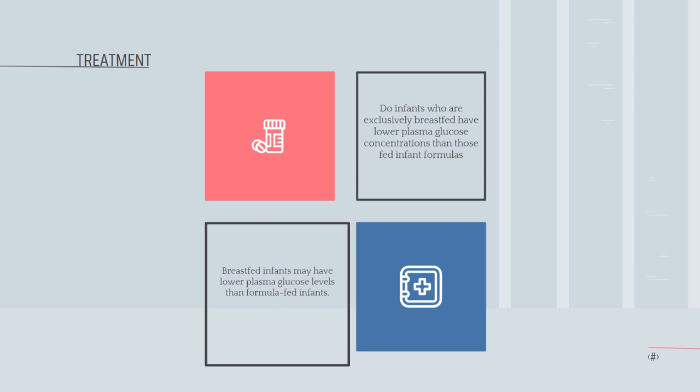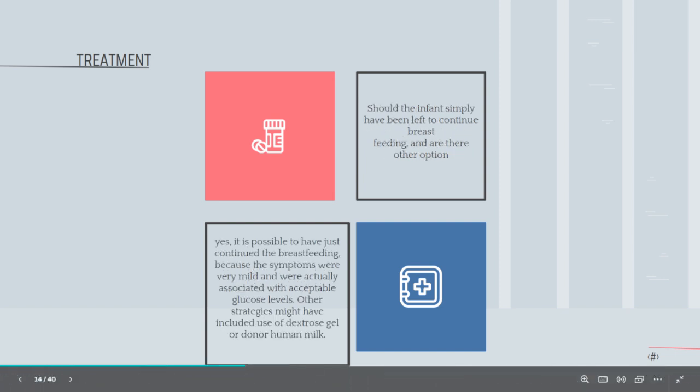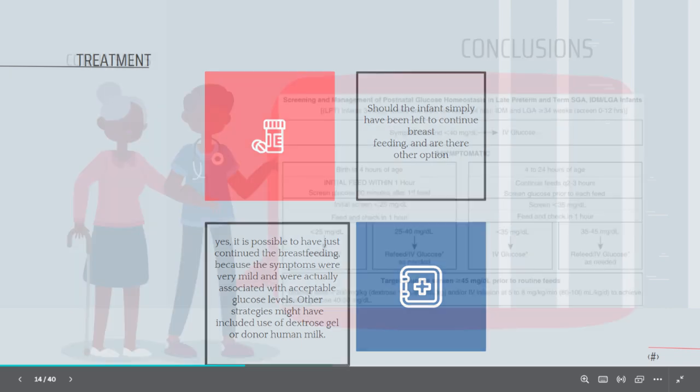Do infants who are exclusively breastfed have lower plasma glucose concentrations than those fed infant formulas? Breastfed infants may have lower plasma glucose levels than formula-fed infants. Should the infant simply have been left to continue breastfeeding? Yes. It is possible to have just continued the breastfeeding because the symptoms were very mild and were actually associated with acceptable glucose levels.